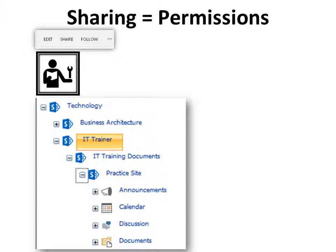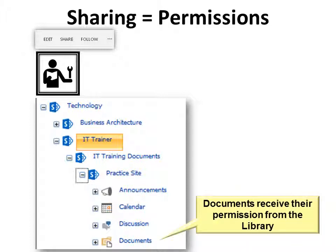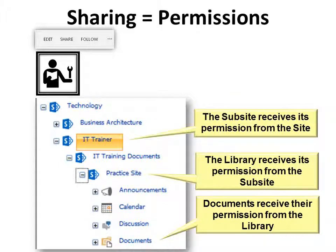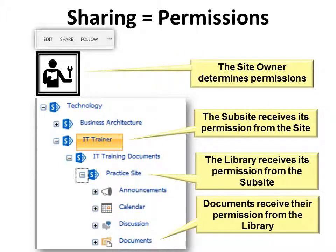So who gets what? A document receives its permission from the library. The library receives its permission from the sub-site. And the sub-site receives its permission from the site — it all flows downstream. The site owner determines permissions and can break or change permissions at any step along the way within their site.